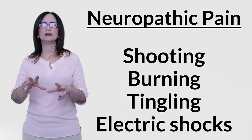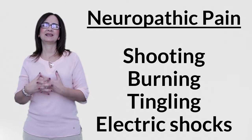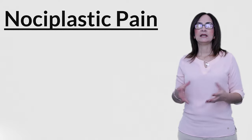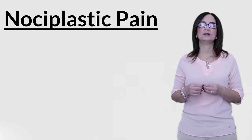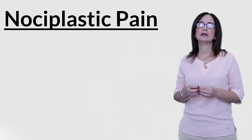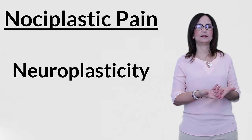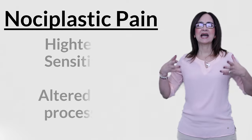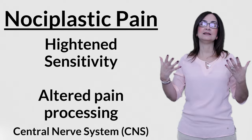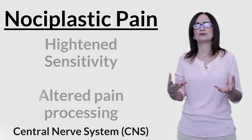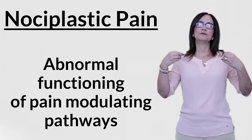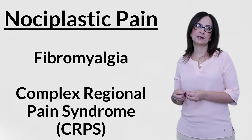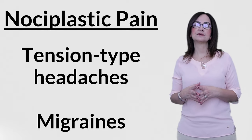Neuropathic pain is often described as shooting, burning, tingling, or electrical shock-like sensations, and may be accompanied by numbness or weakness in the affected area. On the other hand, nociplastic pain is a type of chronic pain that occurs when there is a change in the way pain signals are processed within the nervous system. It involves neuroplasticity. Unlike neuropathic pain, there is no direct damage to the nerves themselves. Conditions like fibromyalgia, complex regional pain syndrome, tension-type headaches, and migraines are examples of nociplastic pain.